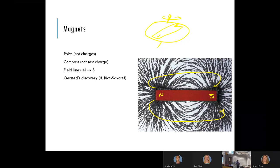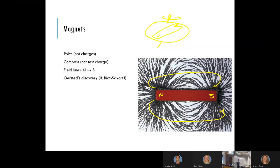Drawing the analogy with the electric field and Coulomb's law, we have empirical evidence of magnetic fields, and this boils down to Orsted's discovery, which eventually leads to the equation known as Biot-Savart. Just like you have Coulomb's law, there is a Biot-Savart law that gives you the magnitude of the magnetic field. I'm still debating whether to give you that equation.